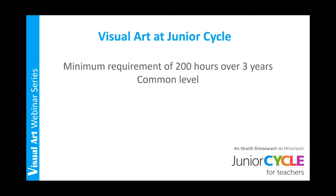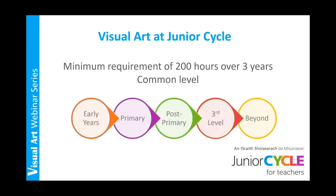Visual art at junior cycle is a subject that requires a minimum of 200 hours contact time over three years. Visual art is a common level course. There is a focus on continuity as now there are similarities between the primary and post primary curriculums in terms of the structure of each specification. Our specification will build on the practice already in place at primary level, and this will enable our students to develop the key skills they will need for lifelong learning. There will be a common thread throughout the various stages of a student's experience of art and other subjects, right through from early years to primary, on through post primary, third level and beyond.